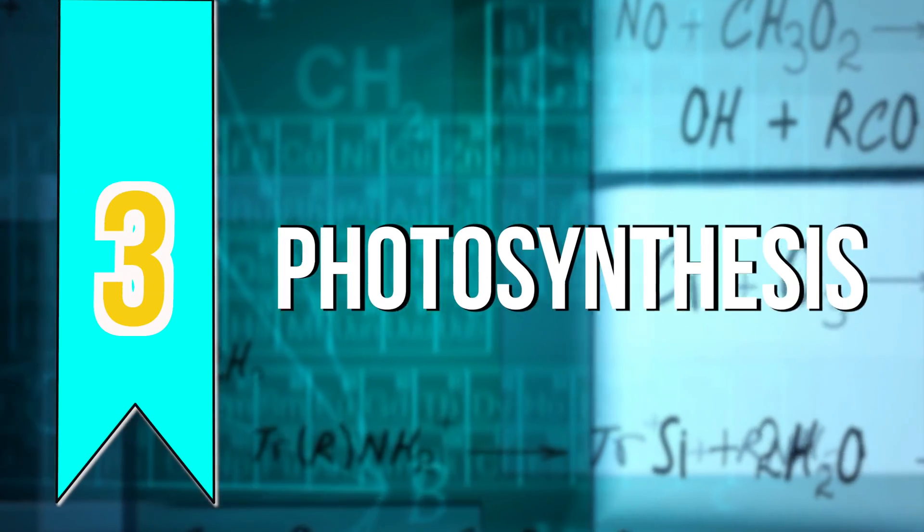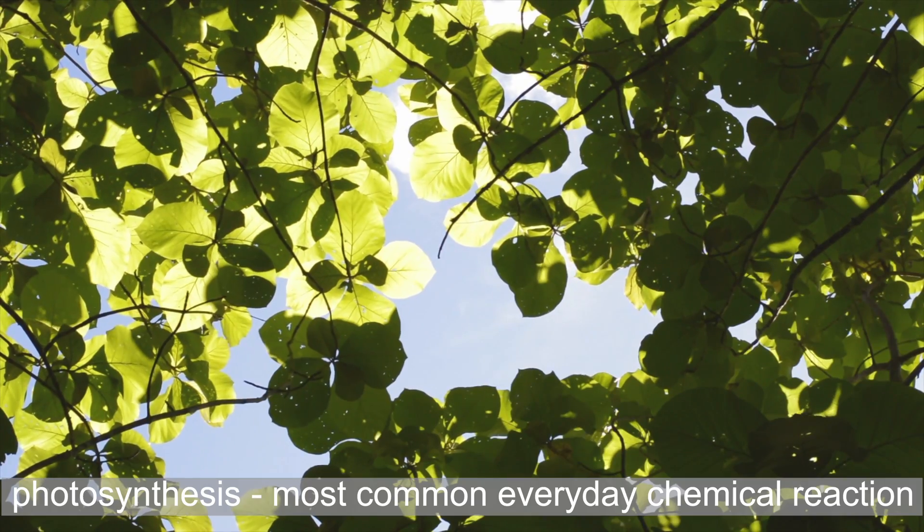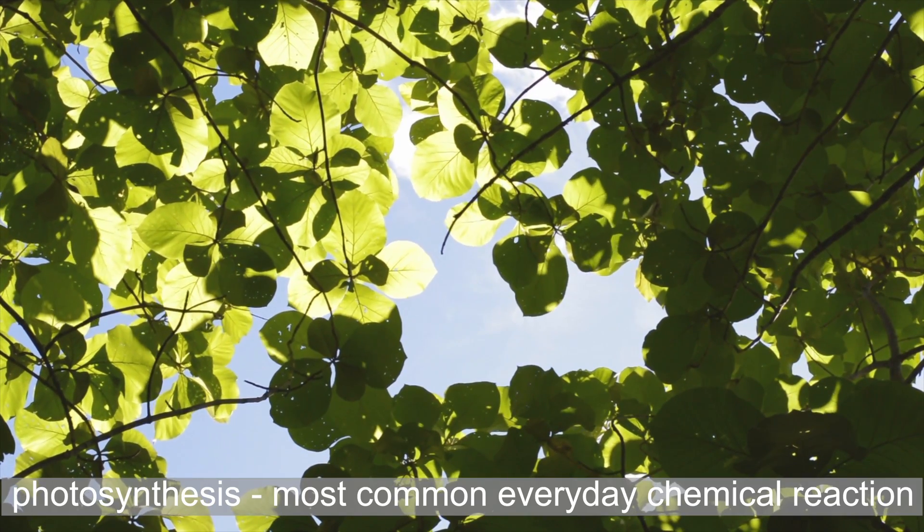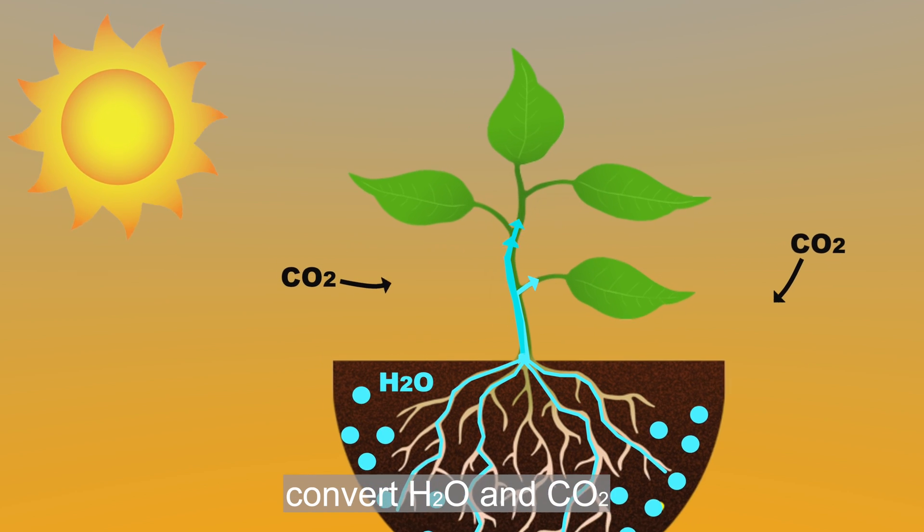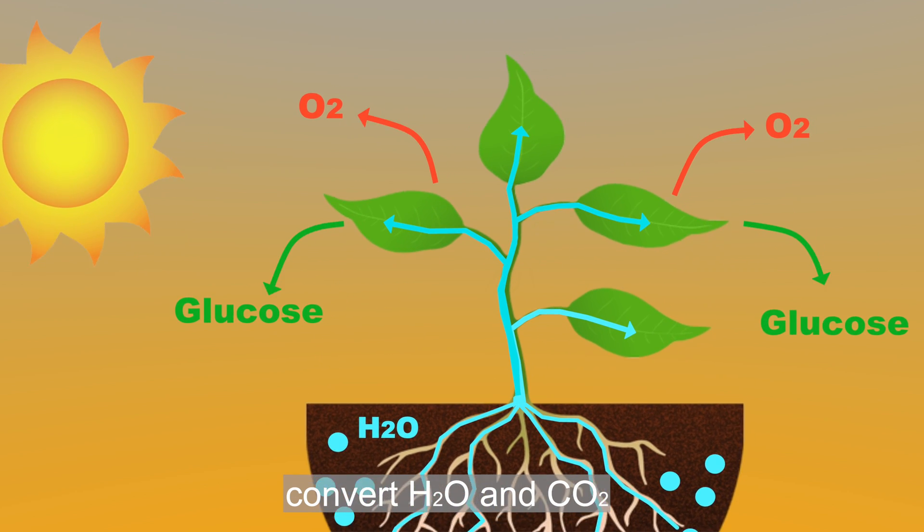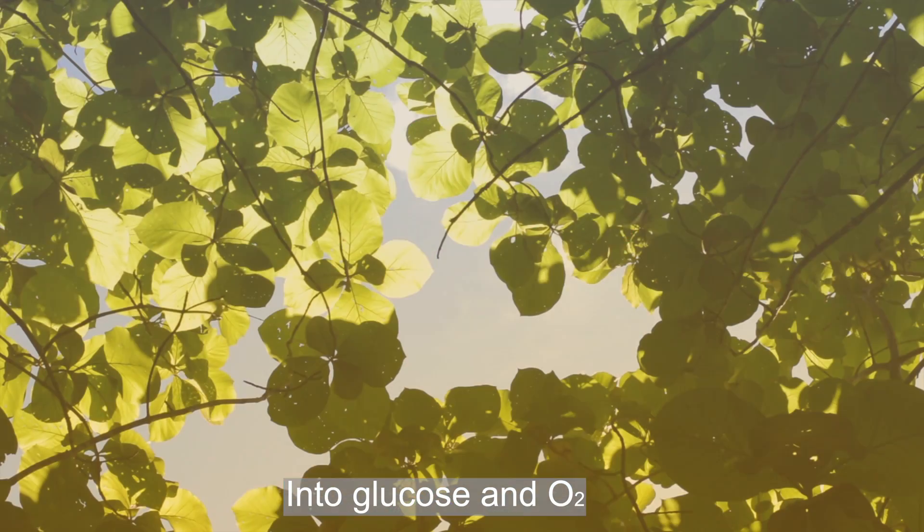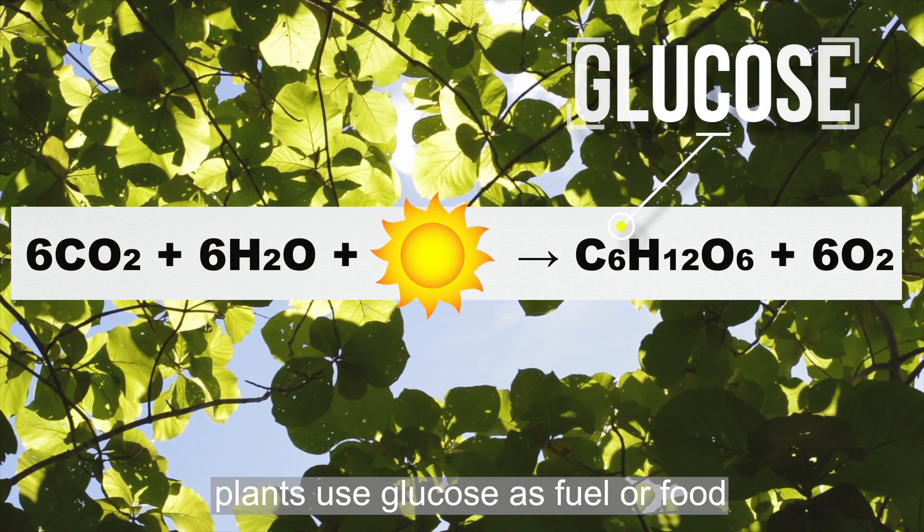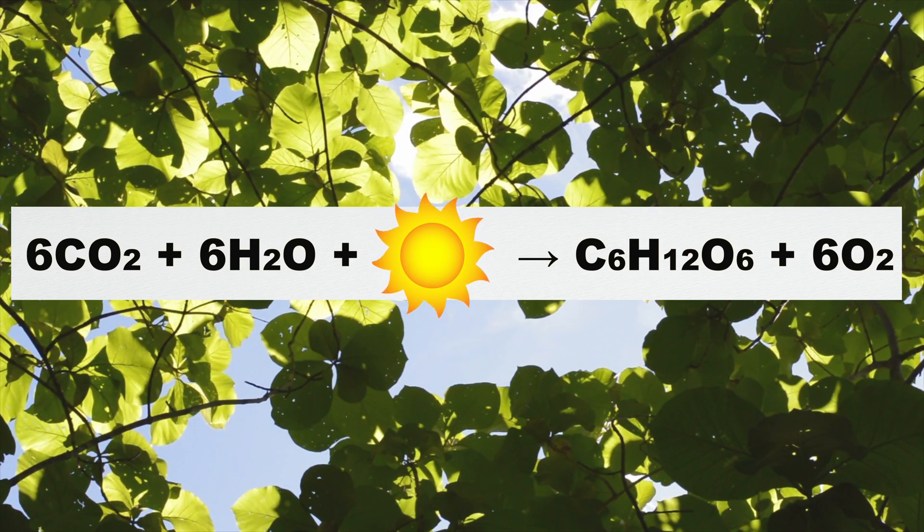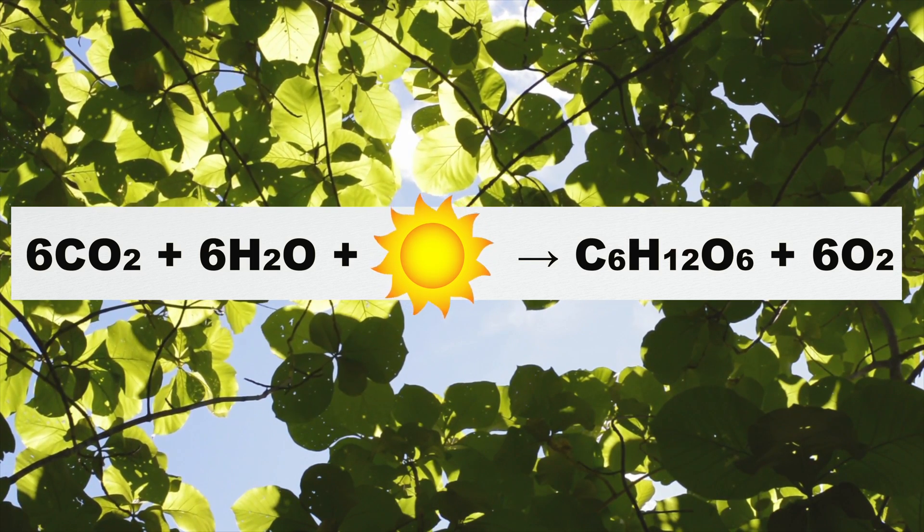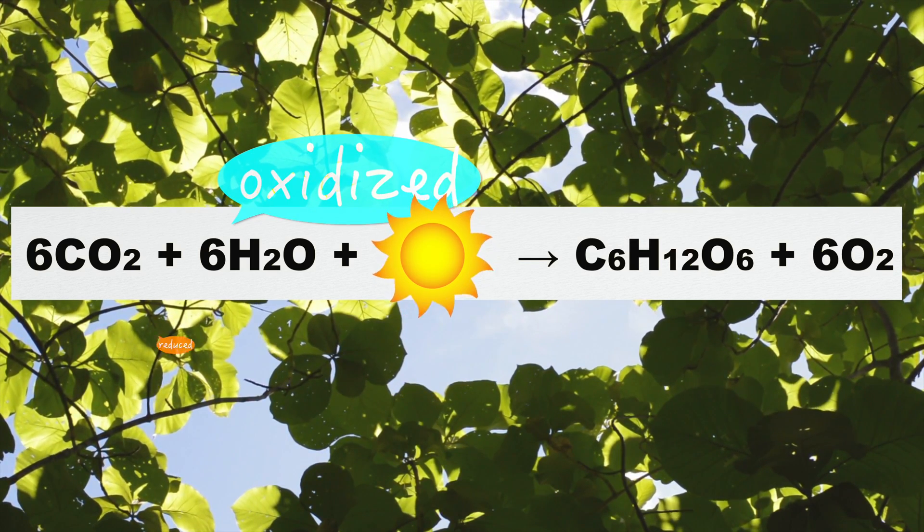Number three, photosynthesis. Photosynthesis is the most common everyday chemical reaction. It takes place in the green leaves of the plants to convert water and carbon dioxide into glucose and oxygen. The plants use glucose as fuel or food. We breathe oxygen that the plants release into the air. And in this reaction, water is oxidized and carbon dioxide is reduced.